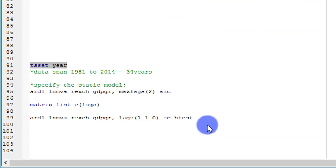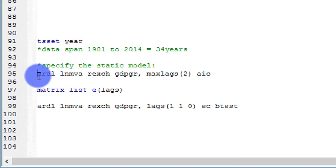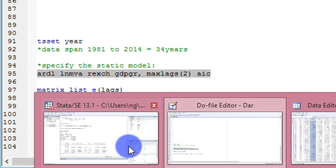The command to specify for the ARDL before I can proceed to do the bounds test is what you are seeing on the screen. This is the command for the ARDL: ardl lnmva rexch gdpgr, lags(2) aic. ARDL, LNMVA, which is the dependent variable. This is the real exchange rate. This is GDP growth rate. And I'm telling Stata to use the maximum lag from the AIC criterion. So having specified this, I run. And this is the output from Stata.